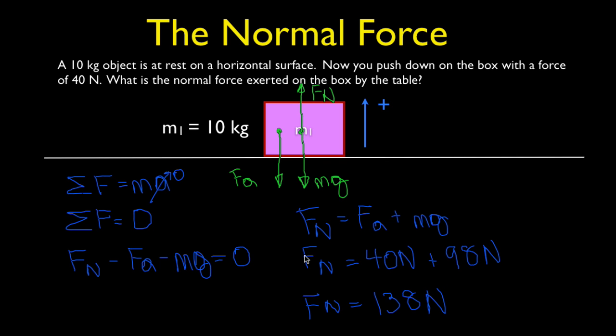It makes sense that the normal force — the force the table is applying to the box — is equal to the weight of the object plus the applied force, especially because it's not moving. When we push harder, the table pushes back harder. So the normal force is 138 Newtons in this case.